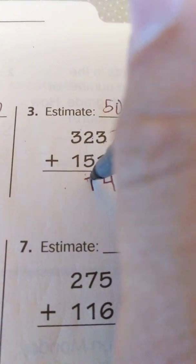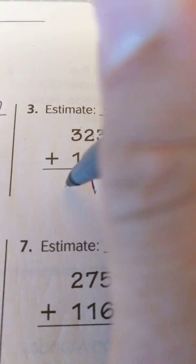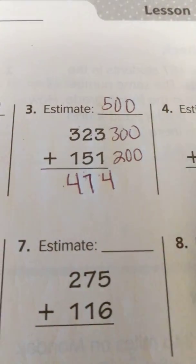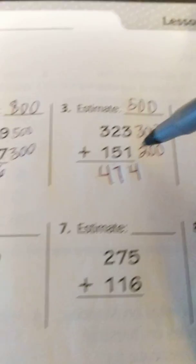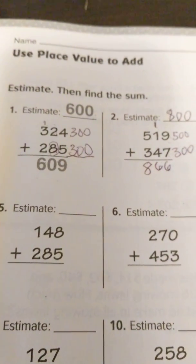And 3 plus 1 is 4, 474. As you see that's pretty close to 500, and that is how we use place value to add.